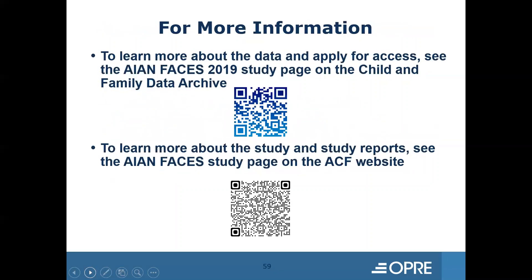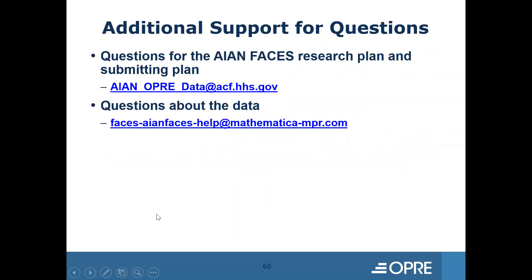There's additional information on the Child and Family Data Archive website as well as on the AI-AN FACES study page on the OPRE website — QR codes are available to help you get there. If you have questions about your research plan, send questions to AIN_OPRE_data@acf.hhs.gov. If you have questions about the data itself, send questions to faces-AIANFACES-help@mathematica-mpr.com.